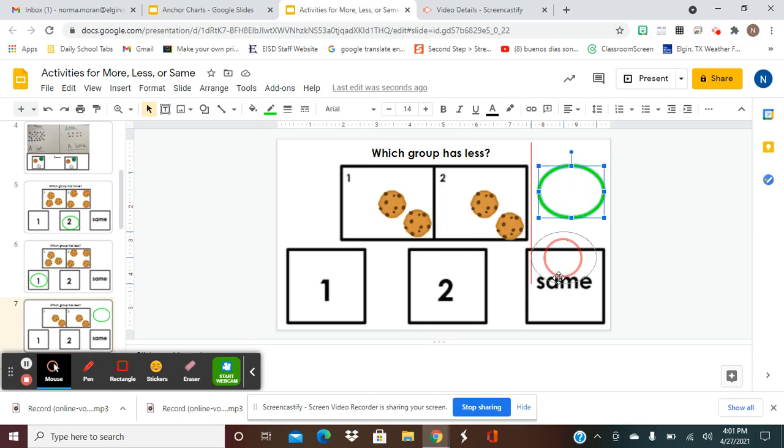So they are the same. Both groups have the same amount of cookies. Group one has two, and group two has two. So they're the same. Okay, so now that we did that activity, let's take a look at our homework.